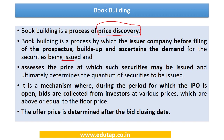The company does not initially fix the price of the shares — it determines the quantum and price through book building. Investors are provided a price band, say ₹80 to ₹100, where ₹80 is the floor price and ₹100 is the cap price. Investors can bid within this range, and the final price is determined based on the bids received.